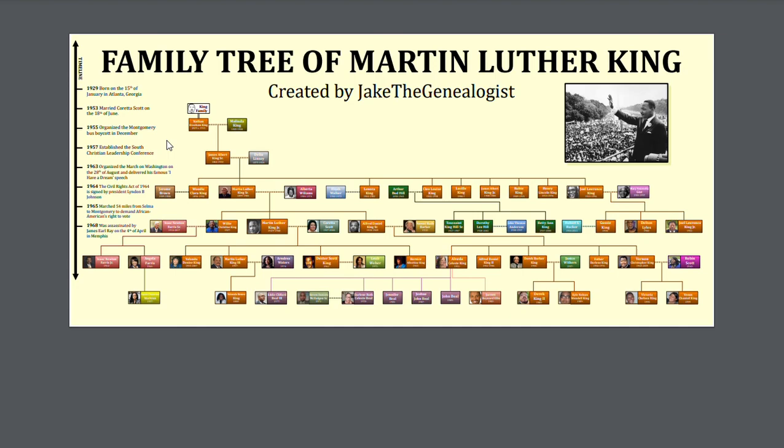Please note that this only covers King's paternal extended family — basically, the King family, people bearing that surname. However, if you would actually like to see his maternal family, please let me know down in the comments and I can make a part two. This chart goes over six generations of his family, and on the left of the screen there's a little timeline detailing his life.